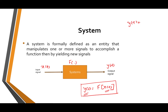The first condition: y of t is equal to x of t. The second condition: y of t is equal to x of t minus 1. The third condition: y of t is equal to x of t plus 1.